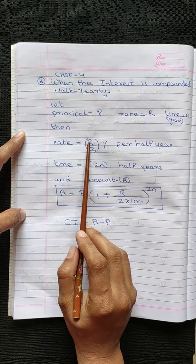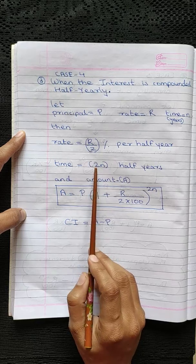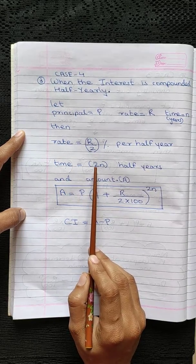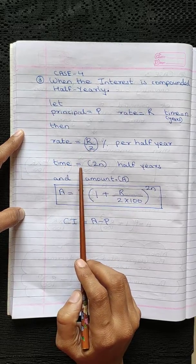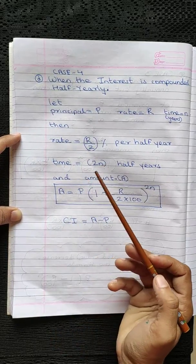So we will divide the rate by 2 and multiply the value of time by 2. Rate will become half and time will double or increase twice.